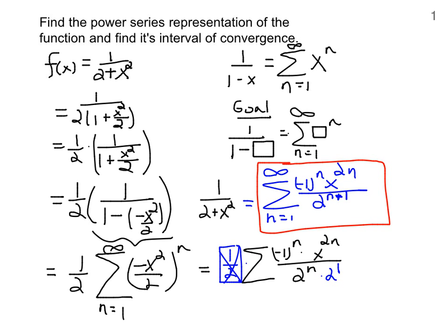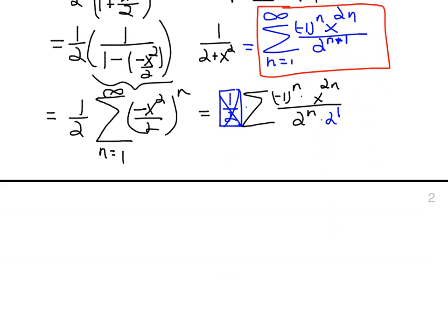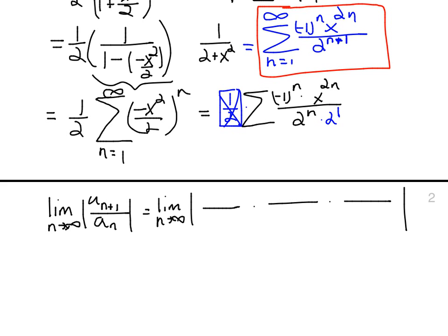The last part of the question is to find the interval of convergence. We apply the ratio test: the limit as n goes to infinity of a sub n plus 1 over a sub n. We look at three terms: negative 1 to the n plus 1, x to the 2 times n plus 1, and 2 to the n plus 1 plus 1.